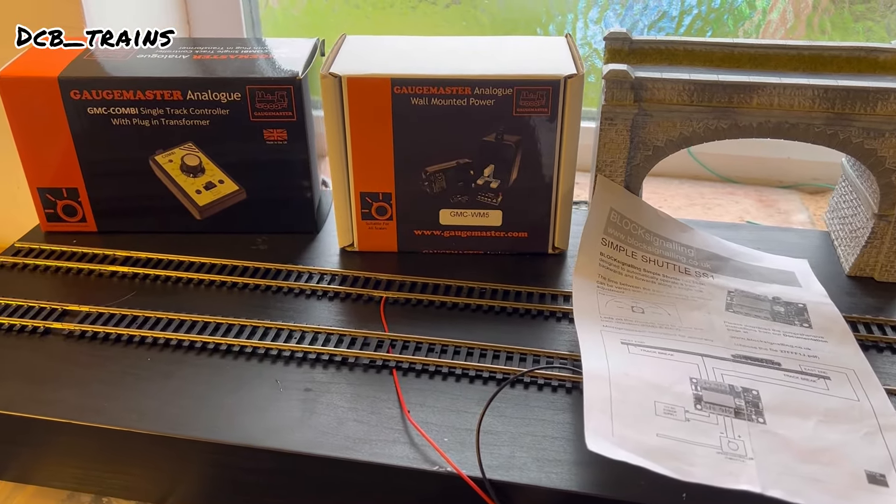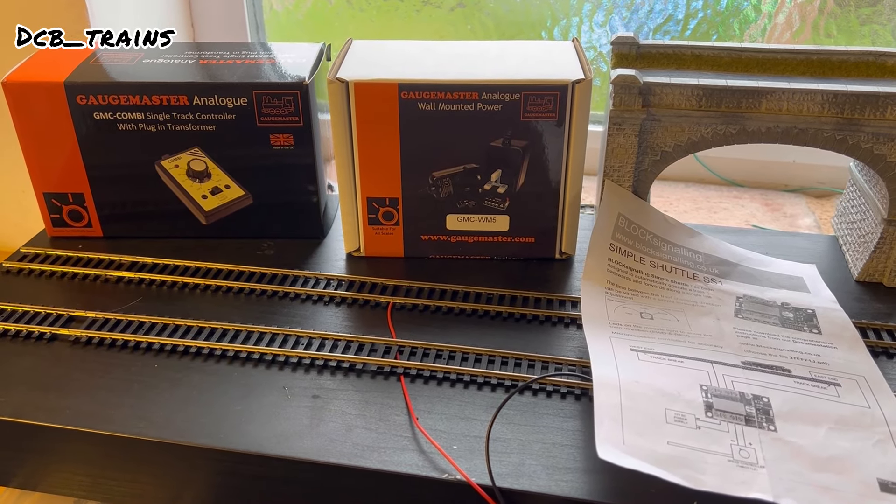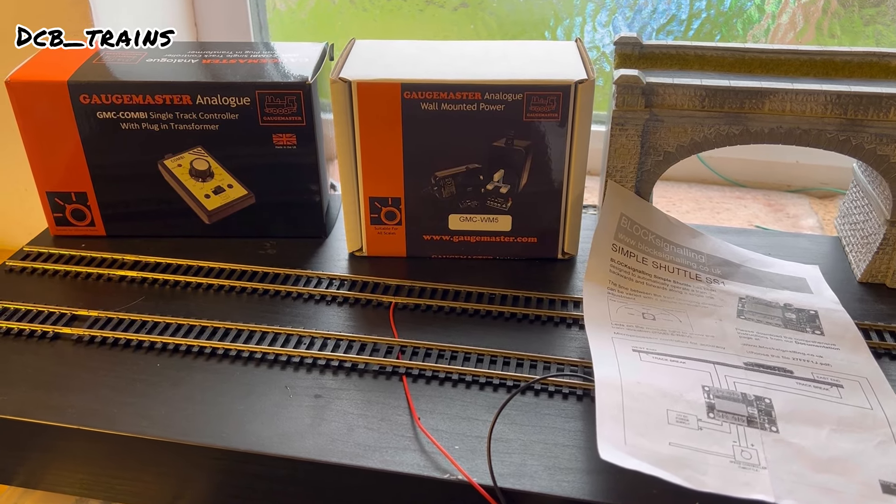And then I've also got the analog wall mounted power which will basically power the Block Signaling unit itself. So the controller will power the actual locomotive and then the mounted power plug will actually power the shuttle unit itself.